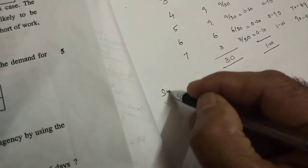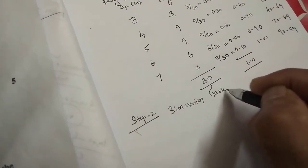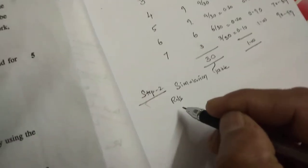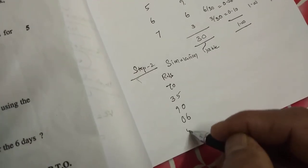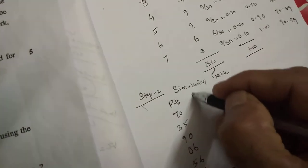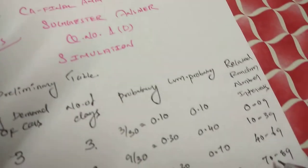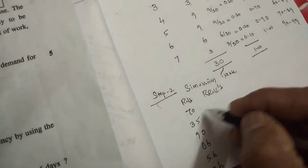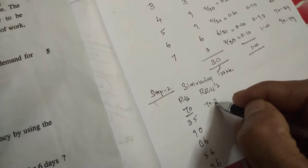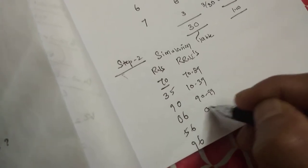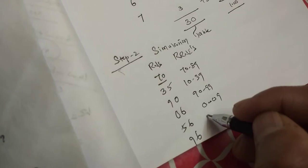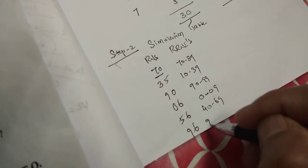We are moving into Step 2: the simulation table. Write the random numbers given, which are 70, 35, 90, 6, 56, and 96. Then write the related random number intervals computed in the last column. 70 falls in 70 to 89; 35 falls in 10 to 39; 90 falls in 90 to 99; 6 falls in 00 to 09; 56 falls in 40 to 69; and 96 falls in 90 to 99.